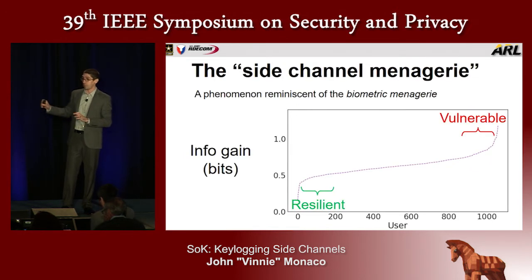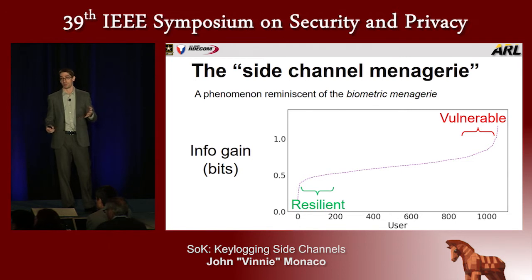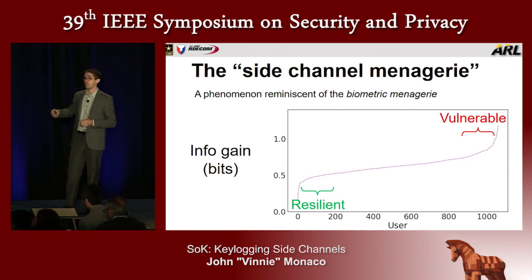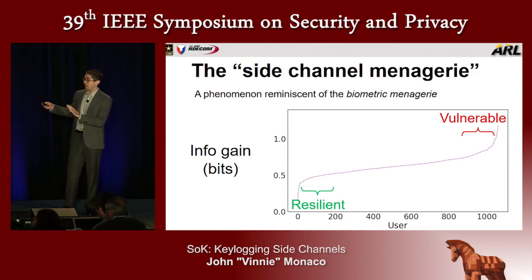However, if we look at the performance of such an attack, it varies quite a bit among users. We end up with a situation reminiscent of the biometric menagerie, which describes the performance of a biometric authentication system — how it works well for some users but not so well for others. Looking at the information gain, or the average number of bits gained per latency for each user, we see a range in performance and attack success.